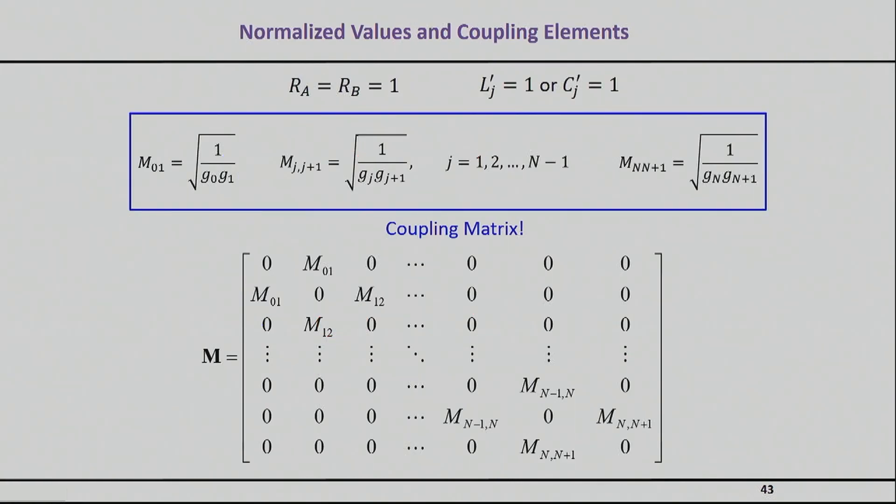It's quite common to synthesize a normalized filter first and then scale. When we normalize things, we do the synthesis assuming a one ohm impedance and usually we assume those arbitrary values of L's and C's to be simply one. If that's the case, then the coupling sections or inverters get the values you see here.